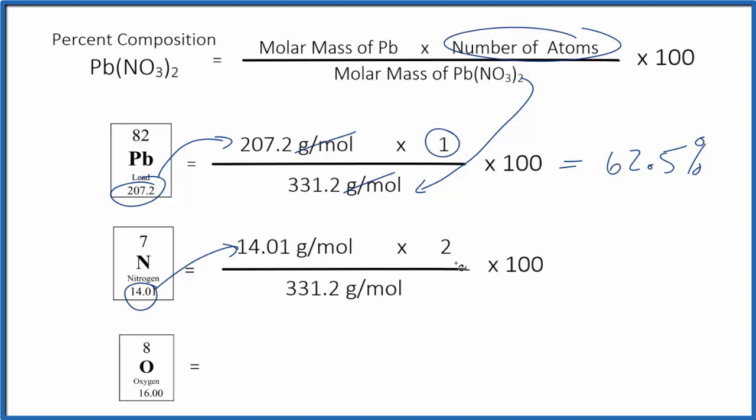then we divide. Finally, that number we multiply by 100. That gives us 8.46% for the mass of nitrogen in lead two nitrate.